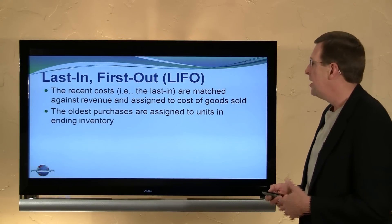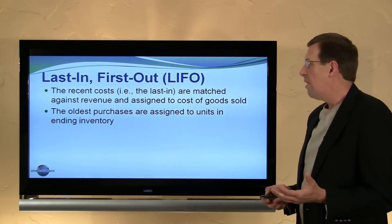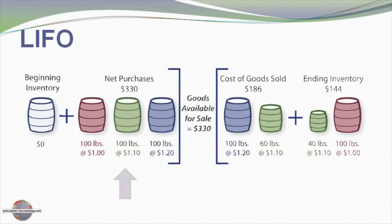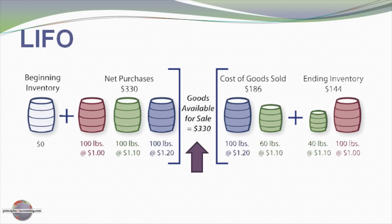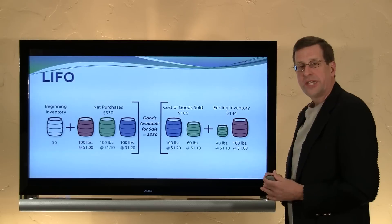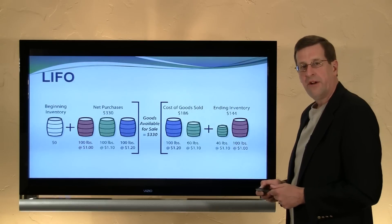Conversely, last-in, first-out (LIFO) is just the opposite: the most recent costs are matched against revenue and assigned to cost of goods sold, while the oldest purchases remain in inventory. Using the same three barrels of nails at $330 total goods available for sale, under LIFO we take the blue and green barrels first — last in, first out — assigning $186 to cost of goods sold, while ending inventory comes from the earliest purchases. LIFO is uniquely a United States-based accounting method; many parts of the world do not recognize or allow the LIFO method.